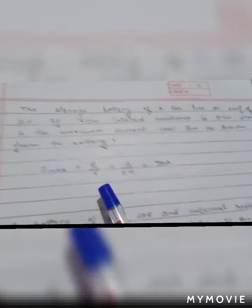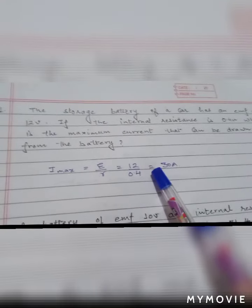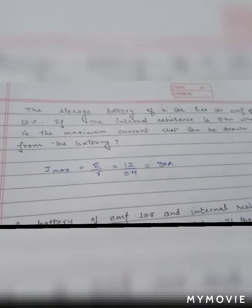And the value of emf, this emf is given as 12 volt. So I equals to E upon R, it is equal to 12 upon 0.4, that one is equal to 30 ampere. This one is the answer.